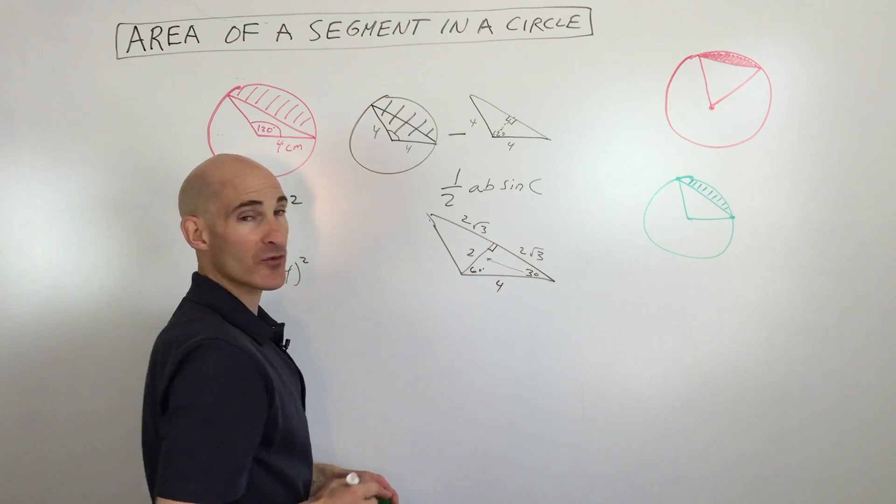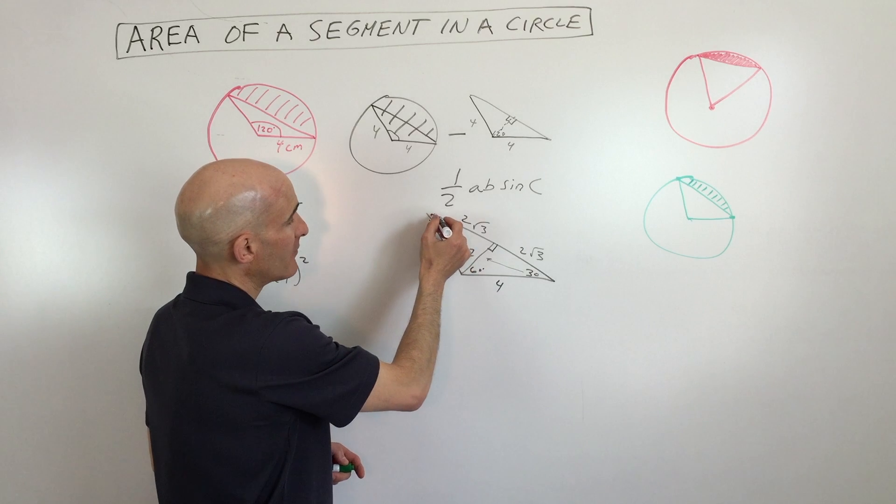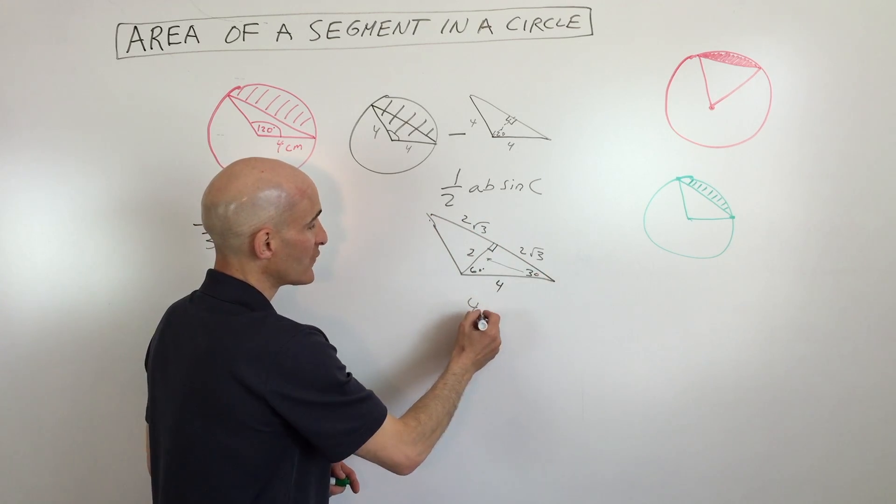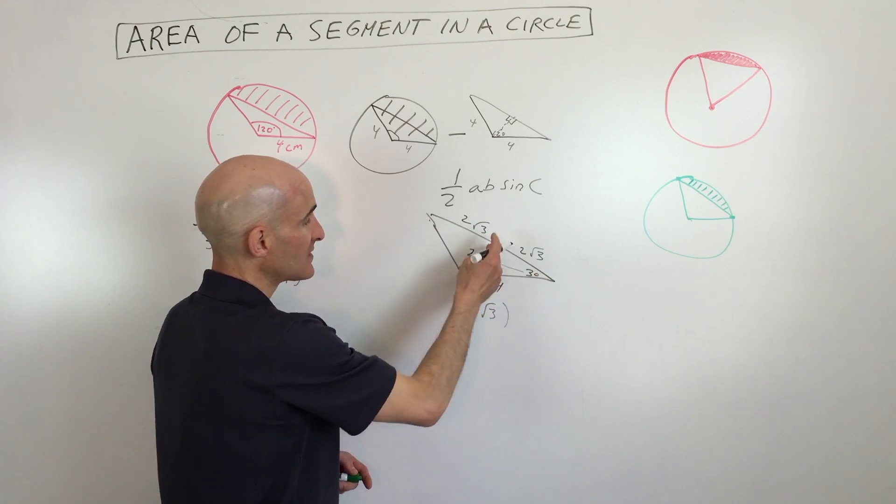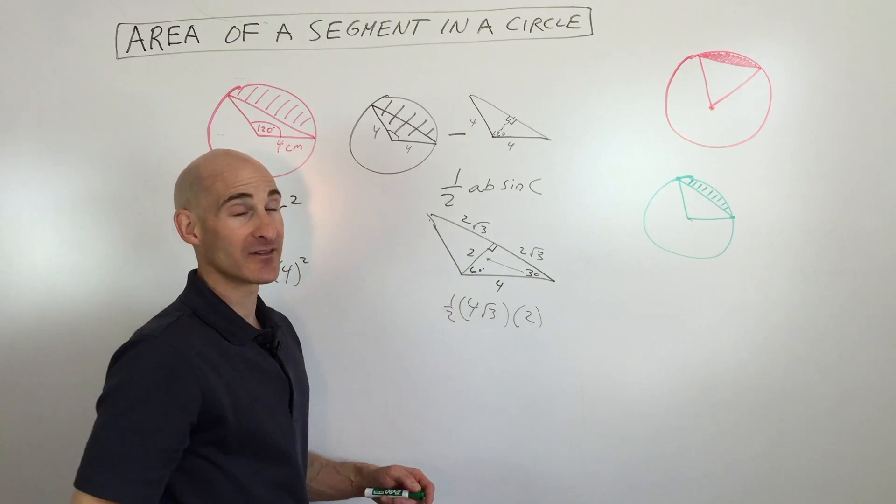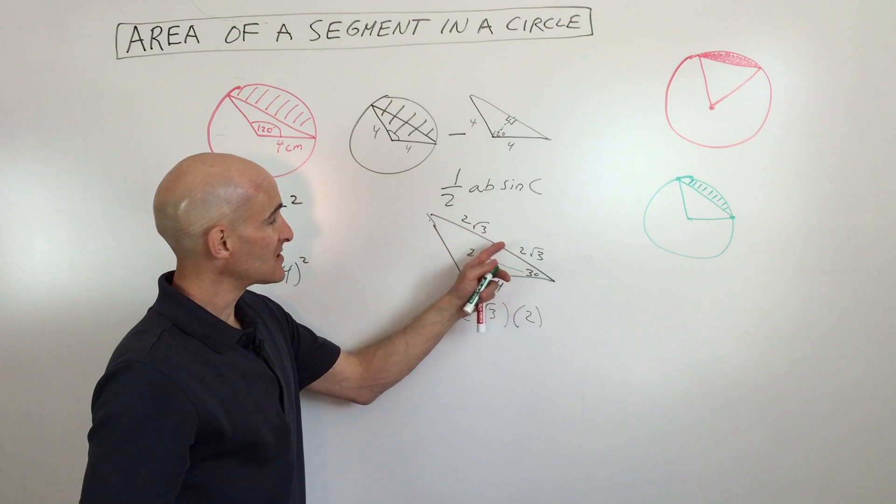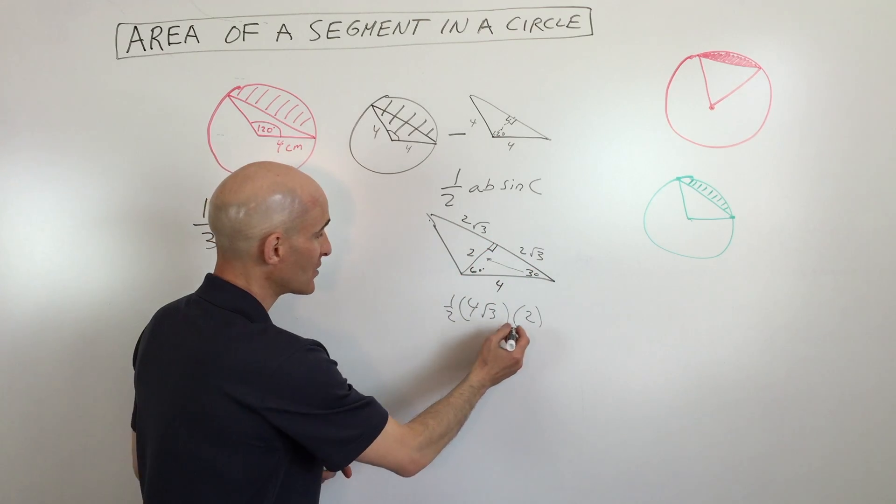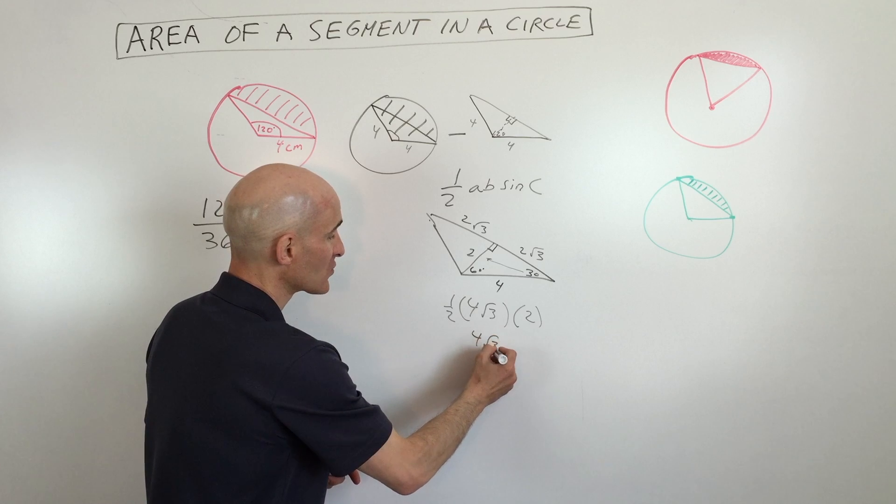So what we have is the base, which is 4 square root of 3, times the height, which is 2, times one-half. So that's the base times the height times one-half, gives us the area of this triangle. That's going to be 4 square root of 3 because the 2 and the one-half cancel.